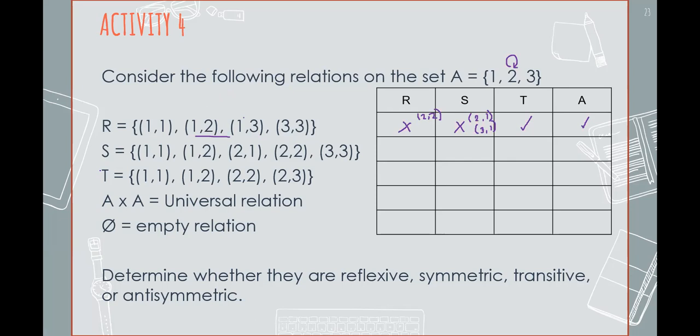For S, is this reflexive? Is there (1,1), (2,2), and (3,3)? Yes, so this is reflexive. Is it symmetric? (1,2) has partner (2,1), so this is symmetric. Is it transitive? Let's check: (1,1), (1,2), (1,2) exists, so automatically it's transitive. Is this anti-symmetric? Anti-symmetric might be confusing. Before you answer if it's anti-symmetric, first ask: is this symmetric? Yes it is symmetric because it has (1,2) and (2,1). The question is: is 1 equal to 2? No. So this is not anti-symmetric.